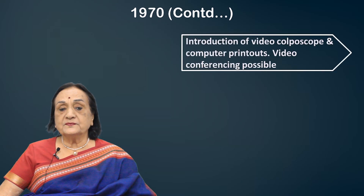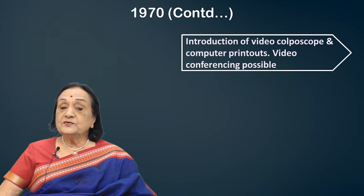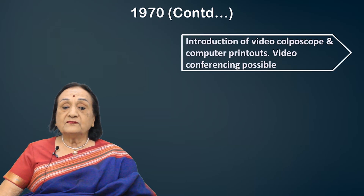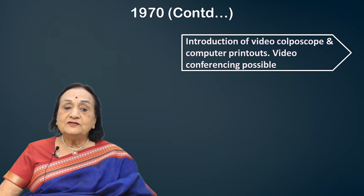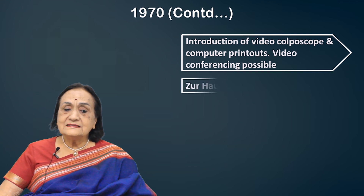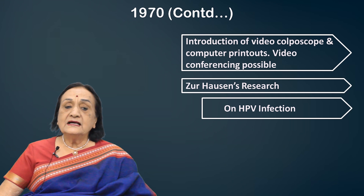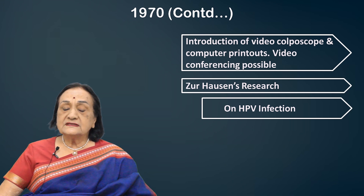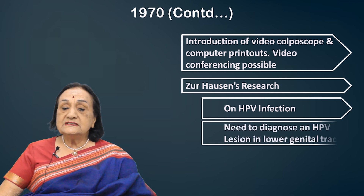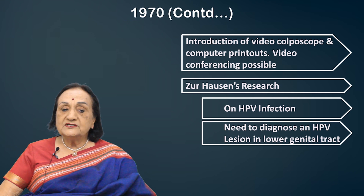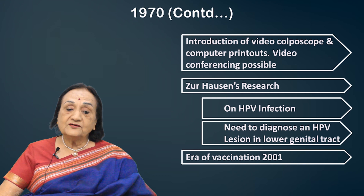Introduction of the video colposcope and computer printouts made it a more acceptable procedure. Video colposcopy conferencing was now possible. Later, Zur Hausen's research on HPV infection added to the interest in the subject, and there was a need to diagnose HPV lesions in the lower genital tract. Of course, the era of vaccination started with the 21st century.